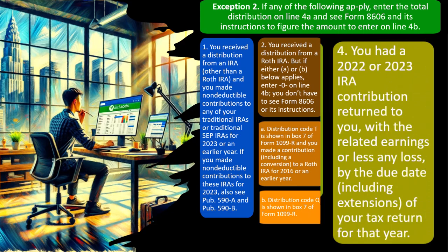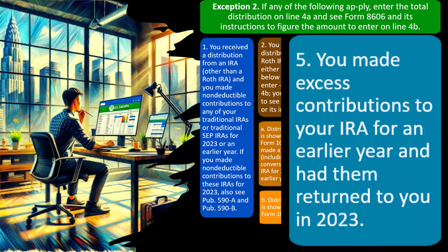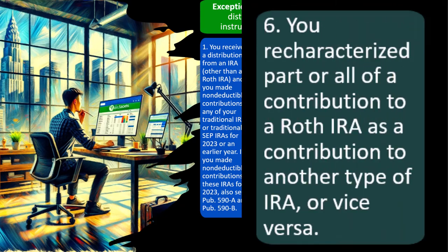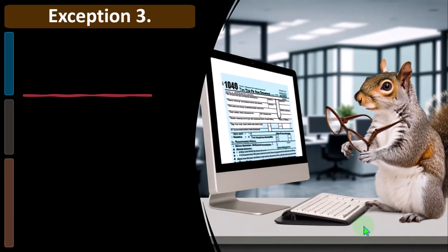Number four: you had a 2022 or 2023 IRA contribution returned to you with the related earnings or less any loss by the due date including extensions of your tax return for that year. Number five: you made excess contributions to your IRA for an earlier year and had them returned to you in 2023. Number six: you recharacterized part or all of a contribution to a Roth IRA as a contribution to another type of IRA, or vice versa.